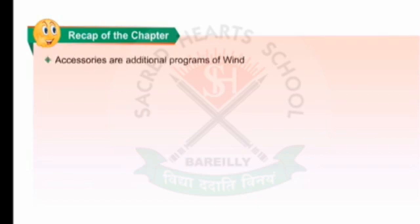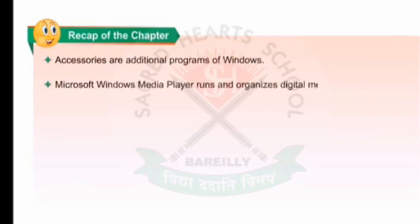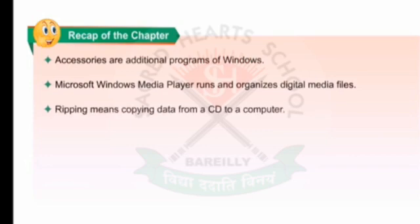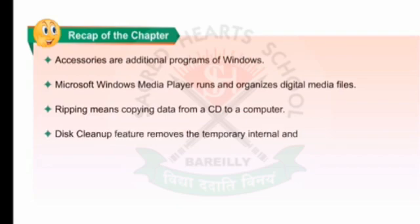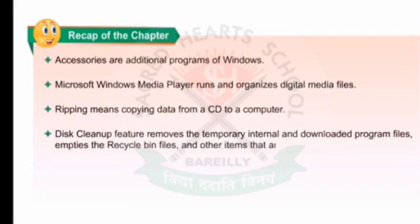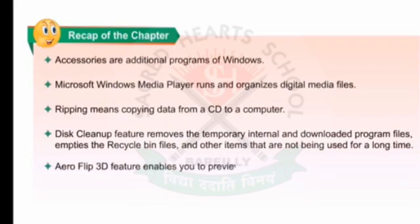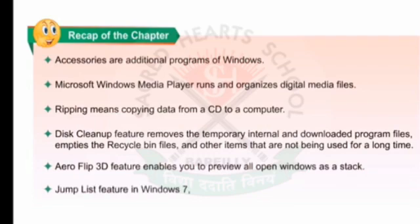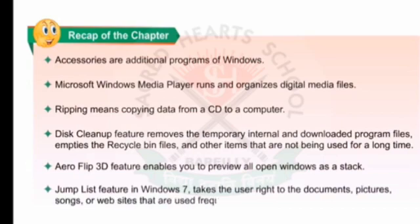Let us quickly glance through the key points discussed in this chapter. Accessories are additional programs of Windows. Microsoft Windows Media Player runs and organizes digital media files. Ripping means copying data from a CD to a computer. The Disk Cleanup feature removes temporary, internal and downloaded program files, empties the recycle bin files, and other items not being used for a long time. The Flip 3D feature enables you to preview all open windows as a stack. The Jump List feature in Windows 7 takes the user right to the documents, pictures, songs or websites that are used frequently.